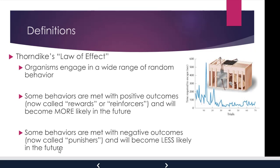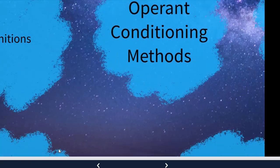With classical conditioning, the behavior was a result of the stimulus — the salivation, the fear, the nausea — rather than playing a role in the conditioning. With operant conditioning, the animal's behavior determines the consequence. The behavior is not reflexive; it's under the control of the animal.